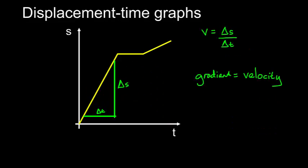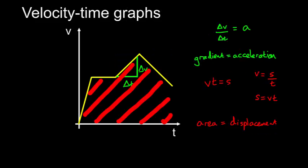So in a distance-time graph, the gradient is the velocity. In a velocity-time graph, the gradient is the acceleration and the area is the displacement.